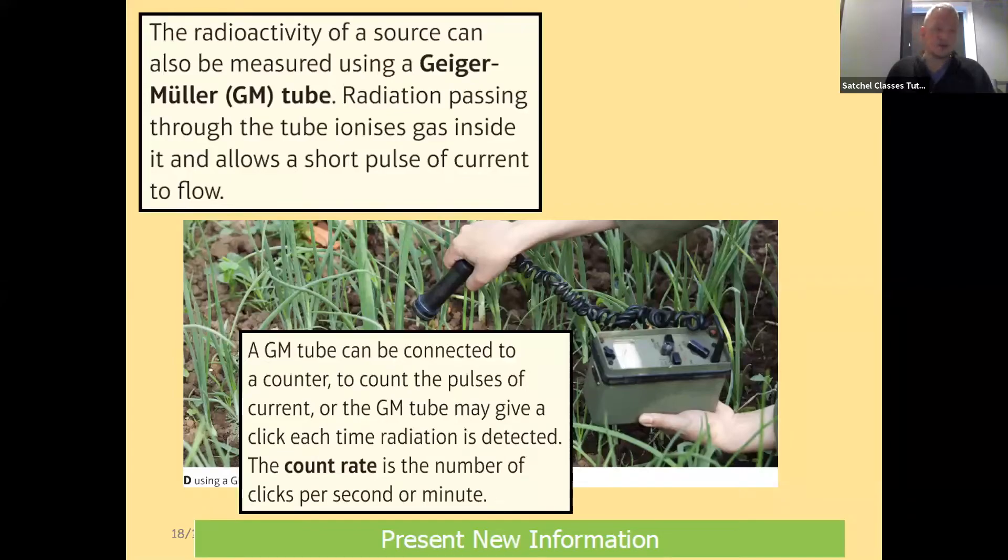You often see this in computer games or in films where someone's looking for a nuclear weapon or warhead, and as they're moving around with the detector it starts clicking. The closer they get, the faster the clicks. The count rate is the number of clicks per second or minute, and the more radioactive counts there are, the faster the count rate, the more radioactivity you are measuring.